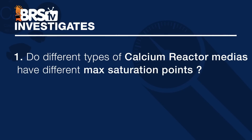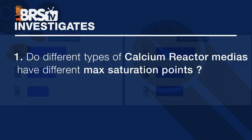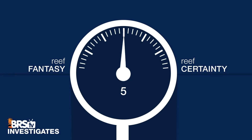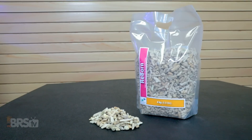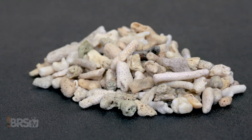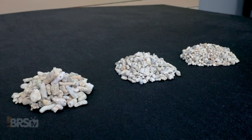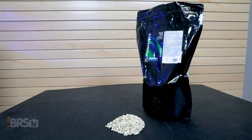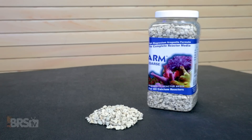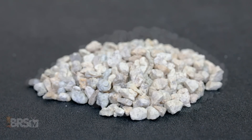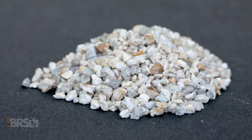So, do different types of calcium reactor medias have different max saturation points? Well, from the data that we've gathered here today, I'll actually put this one right in the middle out of five, since there clearly is a difference between the Reborn calcium carbonate skeletal media at both pH points compared to the other aragonite type of medias. However, the subtle differences between the Coral Lazarus and the ARM media are challenging to chalk up to the media itself, or simply the size and surface area differences between them.